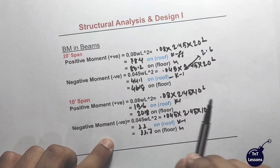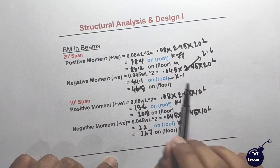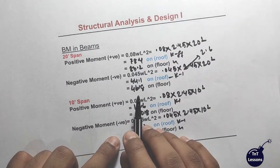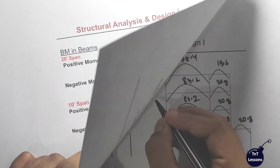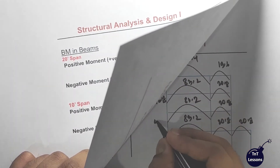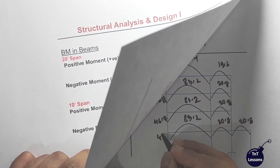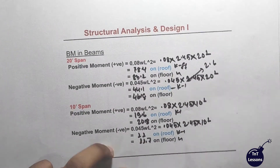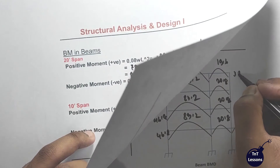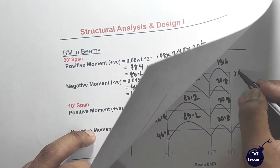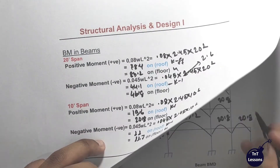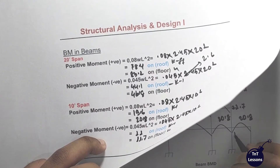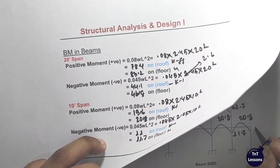Now the negative moment was 44.1 at the curve. And when the negative moment was 44.1, then 46.8 — so 46.8. And the other moment is 11.7. This is also 11.7.